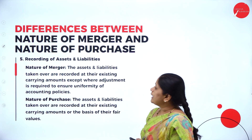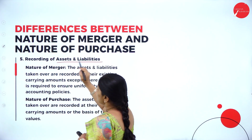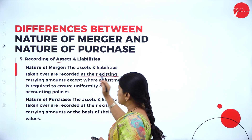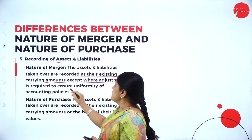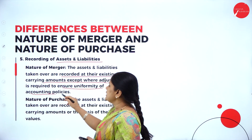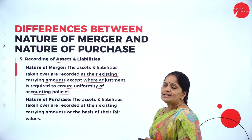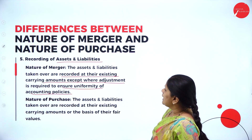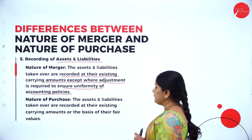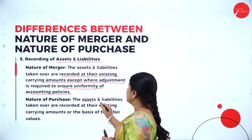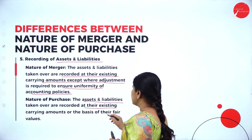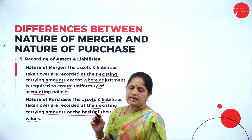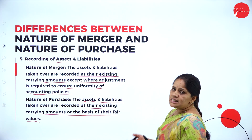The fifth difference relates to recording of assets and liabilities. In the nature of merger, assets and liabilities are recorded at the existing carrying amounts, except where adjustment is required to ensure uniformity of accounting policies. Whereas in the nature of purchase, assets and liabilities are recorded at the existing carrying amounts or on the basis of fair values, whichever is acceptable.